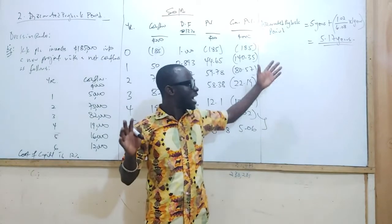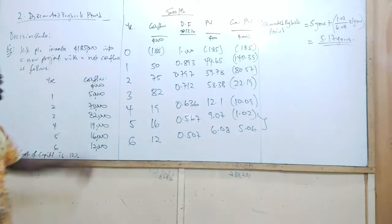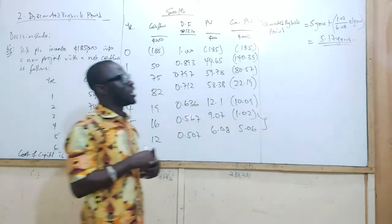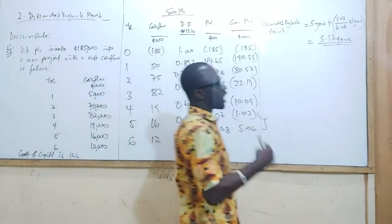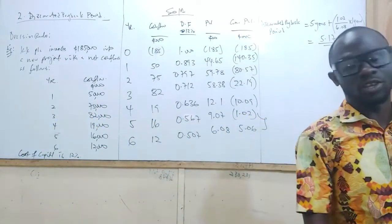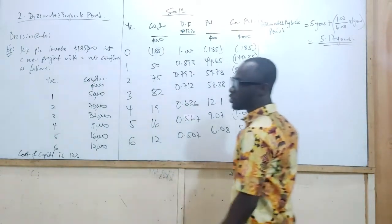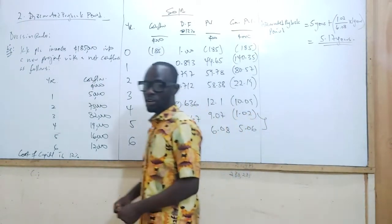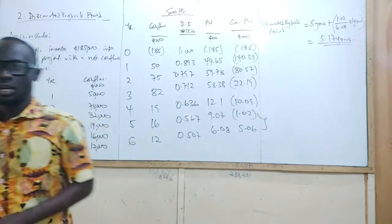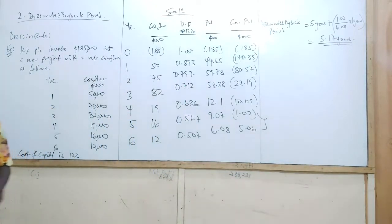So that is the answer for the discounted payback period. We are discounting the cash flows into present values and using those present values to evaluate the projects. Even though the cost was slightly increased, when you do present value it actually gives you a more realistic view of the payback period. This is what you need to understand about the discounted payback period.